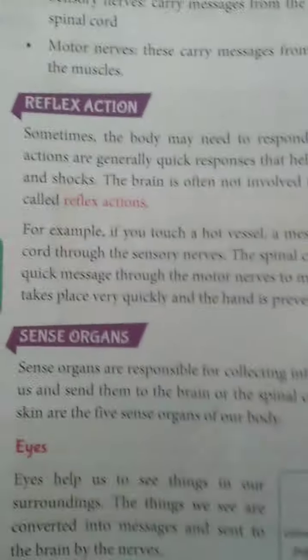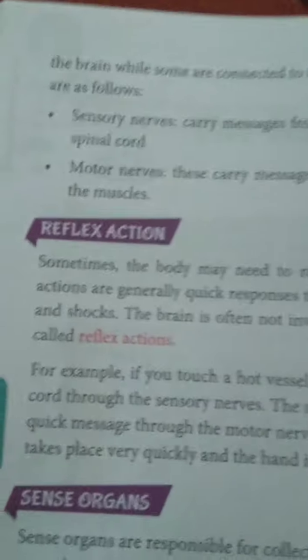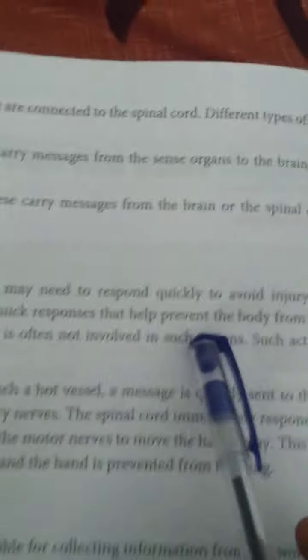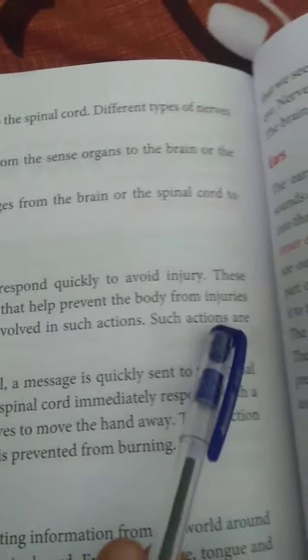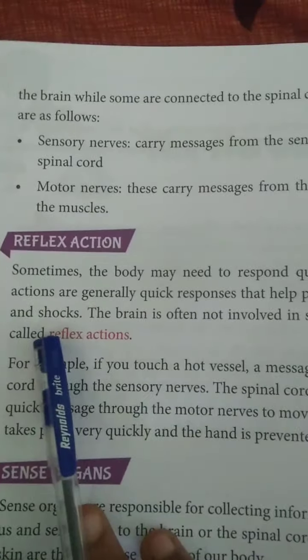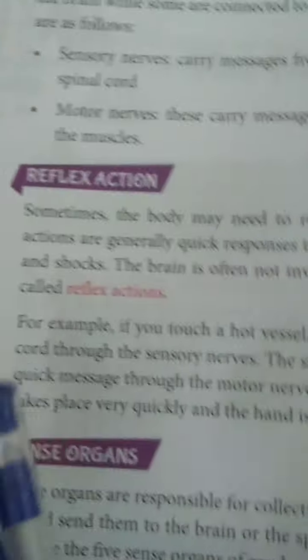Hello dear students, welcome back to my class. Today I'm going to explain the remaining topics of the chapter on the nervous system. The next topic is reflex action. Sometimes the body may need to respond quickly to avoid injury. These actions are generally quick responses that help prevent the body from injuries and shocks. The brain is often not involved in such actions — these are called reflex actions.